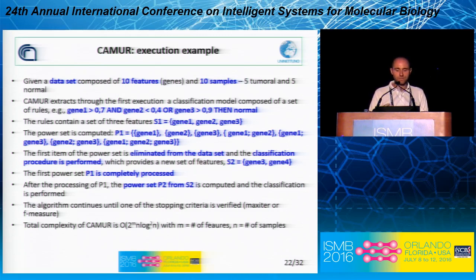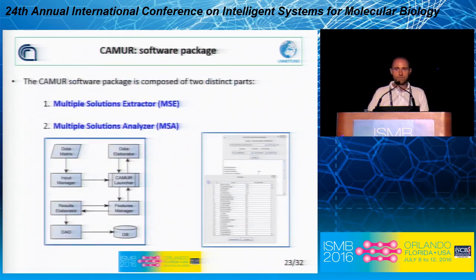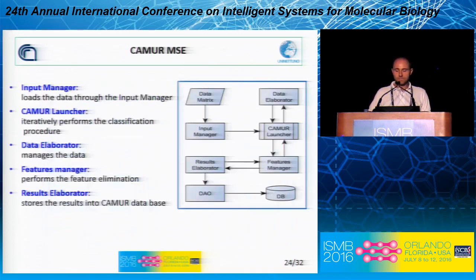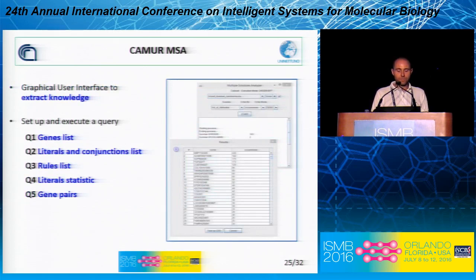Once you have performed all the classification procedures, you can have a list of genes or classification formulas related to a particular class — for instance, a cancer class. The software package is composed of two components: one that does the actual work of extracting the classification rules, and the second is the solution analyzer, which has a user-friendly interface to extract knowledge like the classification rules and the list of genes. You can extract gene lists related to a given cancer, extract the rules, extract the literals and conjunction lists, the statistics about the rules, and gene pairs — genes that appear together in the rules.